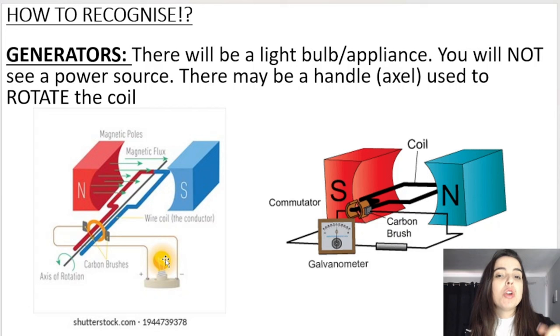They may also mention that they are rotating the coil or the armature. They may even show a handle or an axle being rotated. All of these point to a generator.